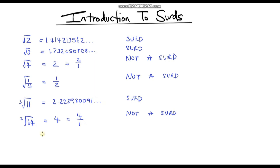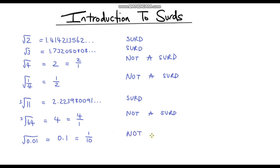Let's calculate the square root of 0.01. Is this a surd or not? We can type it into the calculator — the square root of 0.01 gives us 0.1. You might not even need the calculator: 0.1 multiplied by 0.1 is 0.01. We can write this as a fraction — it's the same as 1 tenth. Because we can write it as a fraction, this is not a surd.